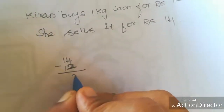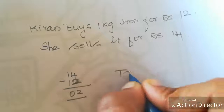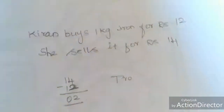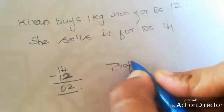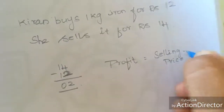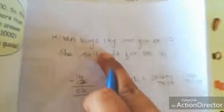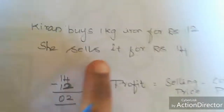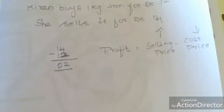4 minus 2 is 2, and 1 minus 1 is 0. So the difference is 2. How do we find the profit? Profit means when we sell something, the selling amount is higher than what we bought it for. The profit formula is: selling price minus cost price. Cost means how much we bought it for; selling price is what we sold the iron for — Rs. 14. Since selling price is higher, she earns a profit of Rs. 2 per kg.